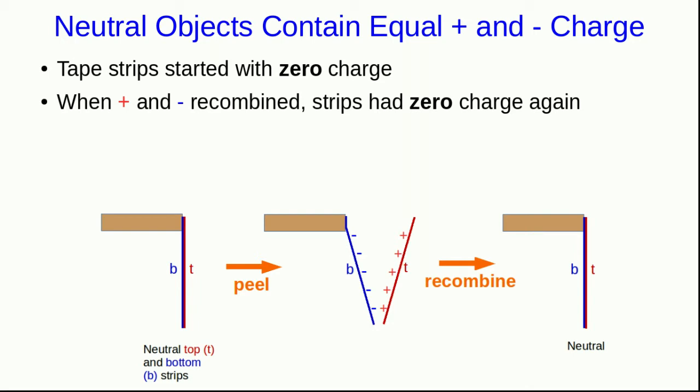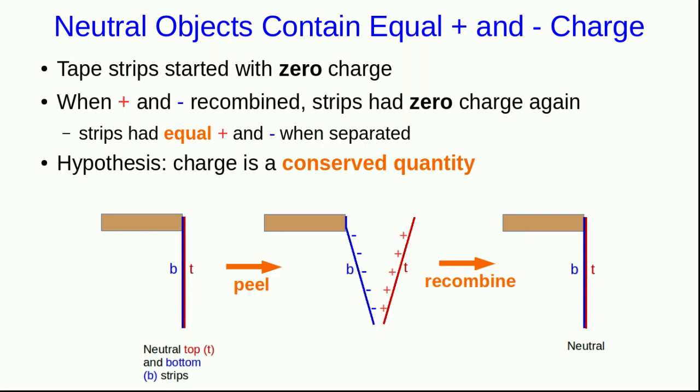And so that suggests that the amount of positive on the top and the amount of negative on the bottom were probably equal so that they exactly cancelled and we were left with zero. And so the total charge on the top and the bottom throughout this whole process was zero. So we can hypothesize that charge is a conserved quantity, that through this whole process we never created any charge. All we've done is separate positive from negative that was there already. And that the neutral bottom and top strips and tape already contained positive and negative charge in equal amounts.